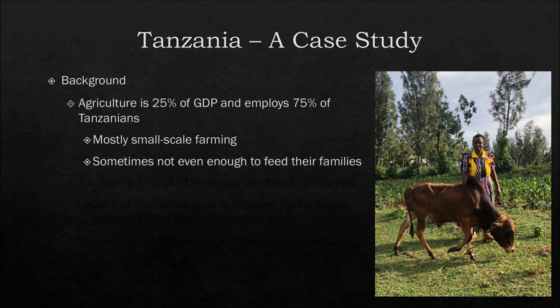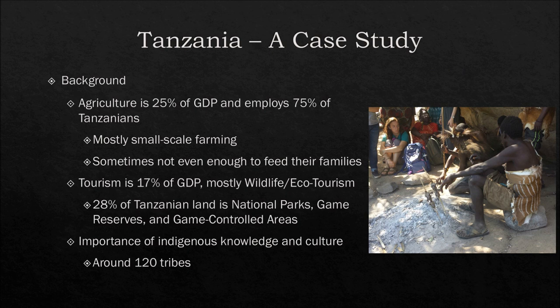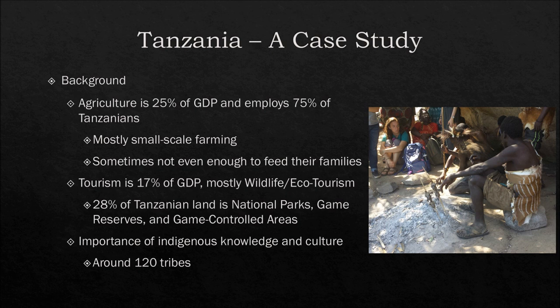Tourism is 17% of GDP in Tanzania, mostly wildlife and ecotourism. Twenty-eight percent of Tanzanian land is national parks, game reserves, and game-controlled areas — a big portion of the country. Ecotourism provides a large economic incentive to conserve wild lands, but there's also the issue where families still can't feed themselves. Tanzania has around 120 tribes — for example, the Datoga tribe are primarily hunters and gatherers, and they struggle to find places to hunt without interfering with agriculture, private land, or protected wildlife areas.